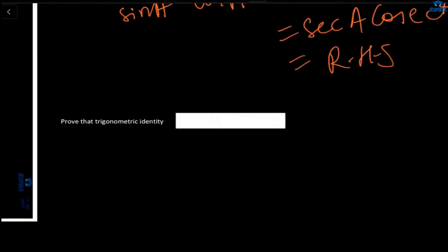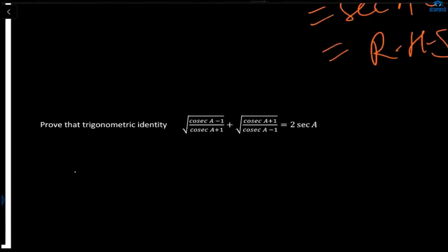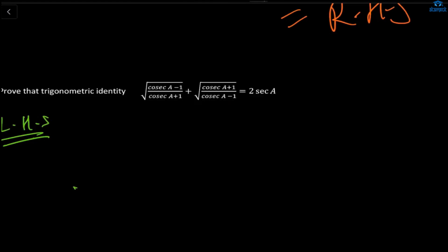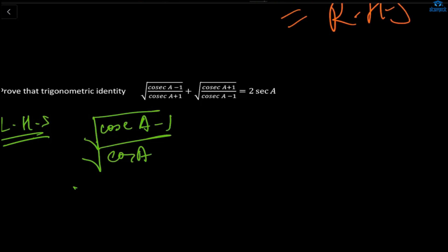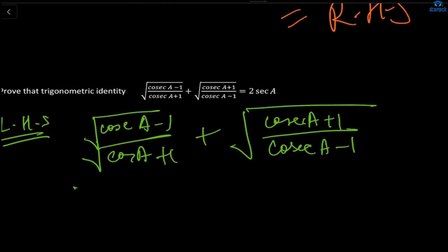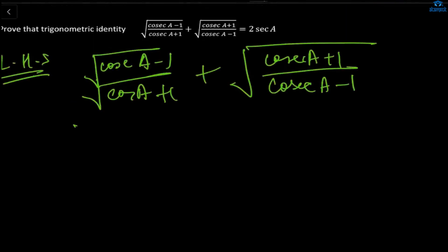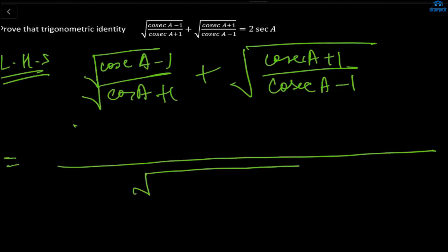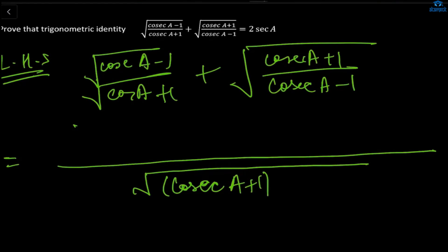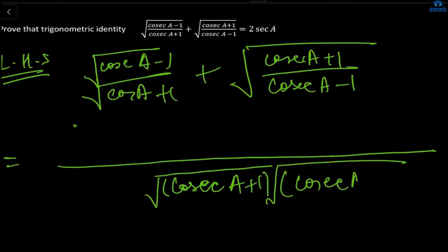Next proof: √((cosecA - 1)/(cosecA + 1)) + √((cosecA + 1)/(cosecA - 1)) = 2 secA. Taking LHS and simplifying with LCM — the denominators are √(cosecA + 1) and √(cosecA - 1), so LCM is √(cosecA + 1) · √(cosecA - 1). The first term multiplies by √(cosecA - 1) and the second by √(cosecA + 1). The denominator becomes √((cosecA + 1)(cosecA - 1)), which is in the form (A+B)(A-B) = A² - B², so equals √(cosec²A - 1).